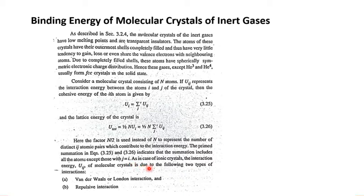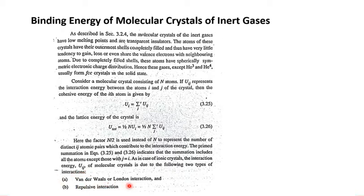As in the case of ionic crystals, the interaction energy U_IJ of a molecular crystal is due to two types of interaction: (A) van der Waals and London interaction, and (B) repulsive interaction.